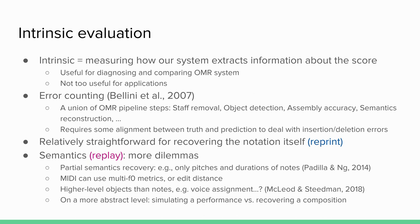Extrinsic evaluation means evaluation within an application context — you don't care about the system in any other way except whether it helps your task. For transcribing and digitizing scores, the appropriate extrinsic metric is how much time it saves when you have to check and correct errors, versus how much time it would take to create the score manually from scratch. Intrinsic metrics are more along the lines of how well the system actually extracts the information encoded in the score. There is a finite amount of visual objects, encoding a finite amount of notes with attributes — so this is a set of checkboxes your system should be ticking.